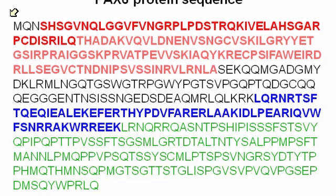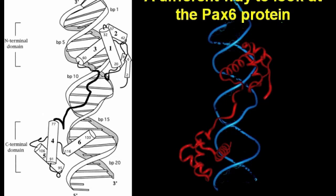So Pax-6 is a transcription factor, and so what that means is that the Pax-6 protein binds to the DNA. In this set of cartoons, on the left-hand side, we have a schematic showing the double helix of DNA, and then the circular domains marked 1, 2, 3, 4, 5, and 6 represent the parts of the Pax-6 protein that physically bind to DNA and allow it to turn genes on or off.